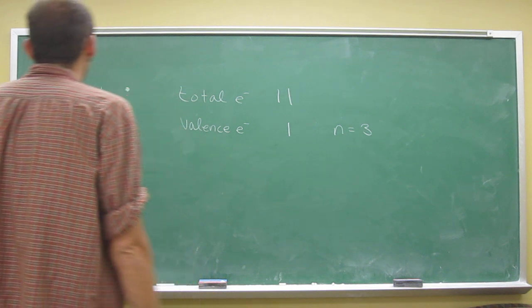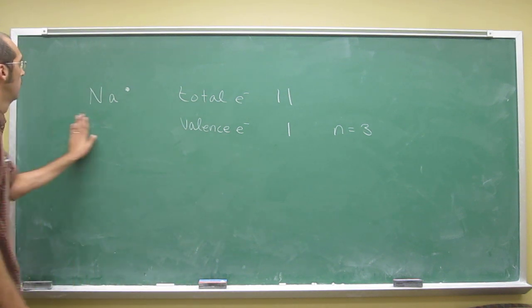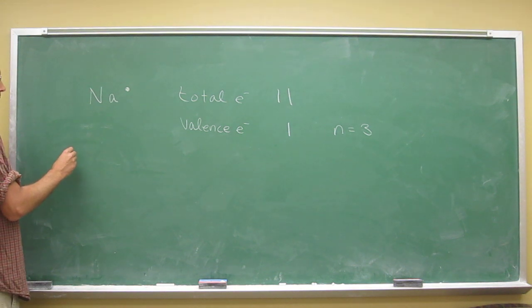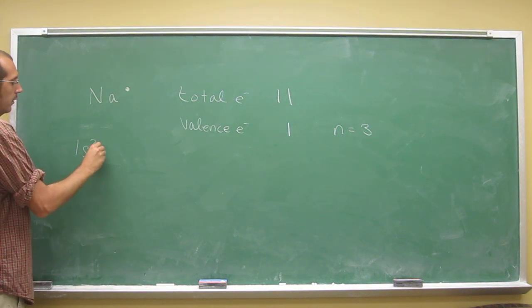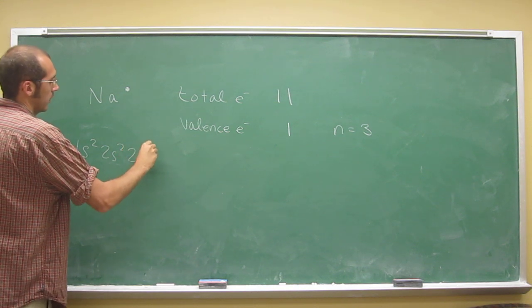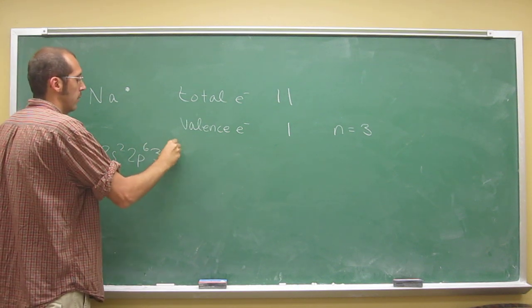So again, if you wanted to write out the full electron configuration, it would be 1s2, 2s2, 2p6, 3s1.